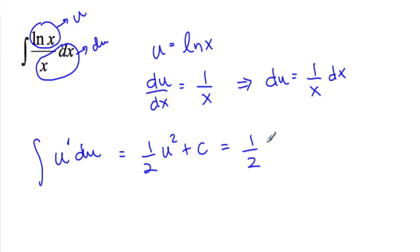And that's 1 half ln x squared plus c. Let's do a little check, because when you're new at u substitution, this is a hard example. So let's just take the derivative. We're going to check.